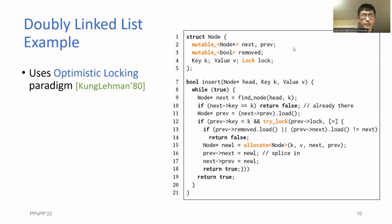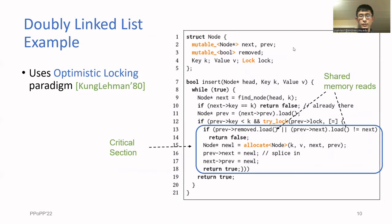The critical section is highlighted in blue, and it corresponds to the tryLock on the previous line. Inside the critical section, we can read from shared variables, write to shared variables, allocate memory and free memory, and do all the useful operations.